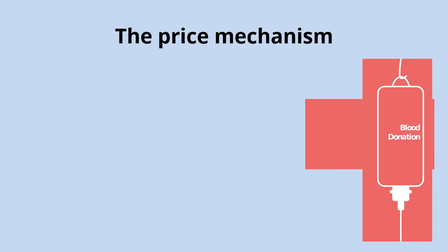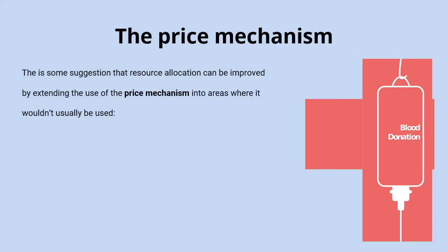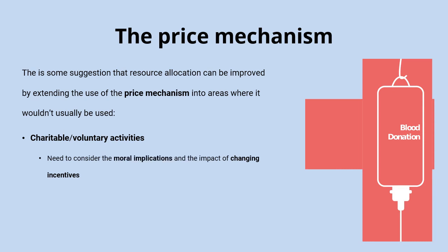Even with these problems, there is some suggestion that extending the price mechanism could actually improve the allocation of resources. One area is charitable or voluntary activities — for example, giving blood, where we have a shortage. We could introduce a market for this and actually pay people for their donations. The price mechanism is being used to incentivize donors — who are effectively the suppliers — and paying them can give them the incentive to supply more.